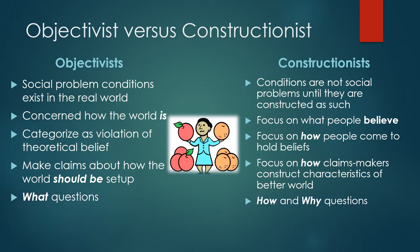Objectivists ask "what" questions — they want to accurately describe the conditions and phenomena going on in the world. Constructionists look at the same phenomena but ask "how" — a process question — and "why" — asking about the motives of the people involved. Constructionists would say they are not trying to fix something wrong with the objectivist point of view, but rather they are adding a layer: now that we know what, let's understand the how and the why. Constructionists see themselves as giving additional information to objectivism.